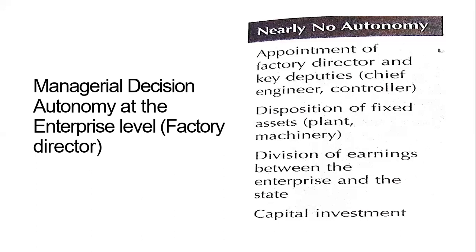The third point is the distribution of earnings. Whatever return earnings the enterprise is making, you cannot distribute them within the enterprise. It is the state who decides what portion of the net earnings should be given to the enterprise and what portion should be retained by the state. The fourth point is capital investment — company directors have no authority over capital investment.